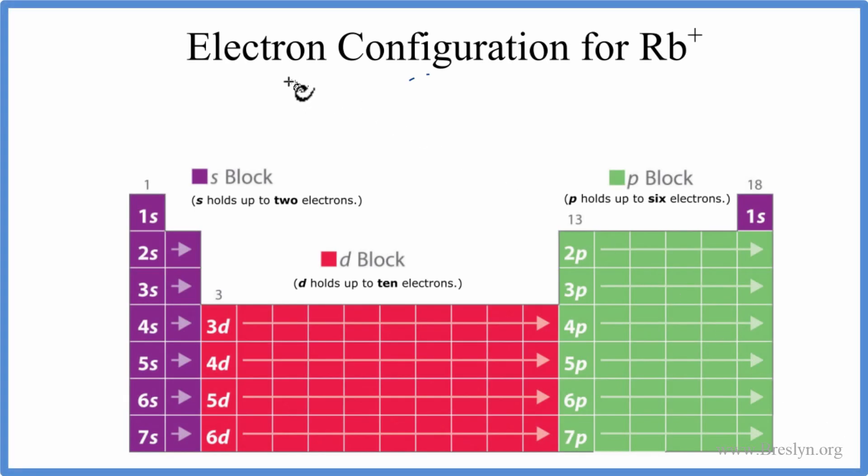In this video, we'll write the electron configuration for Rb+, that's the rubidium ion. But first, before we do that, let's write the configuration for just Rb.